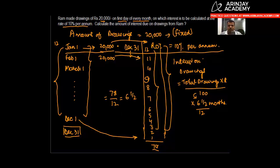So the total drawings which are made: he drew 20,000 per month, so he would do 20,000 into 12 into the rate of interest, which is 10%, divided by 100 into 6.5, which can be written as 13 by 2, and then this 12 will come in the denominator.